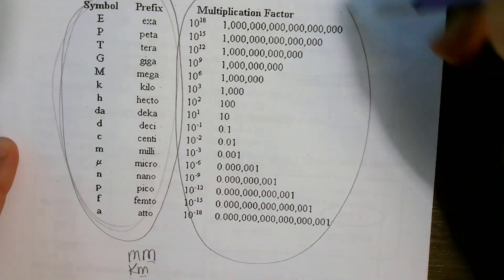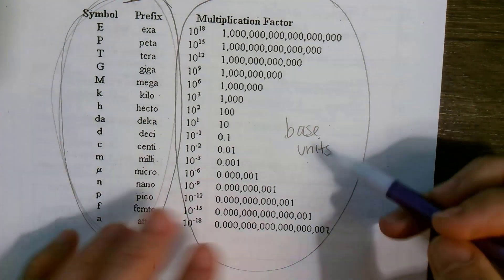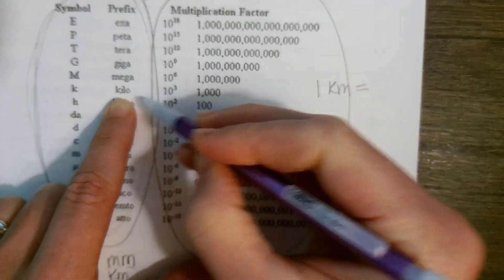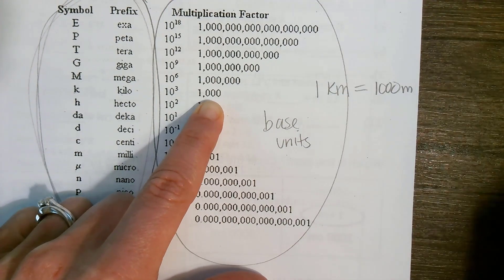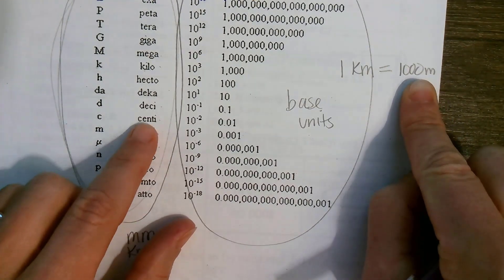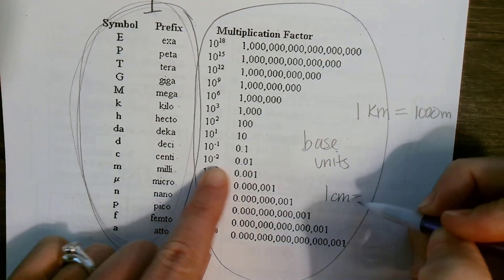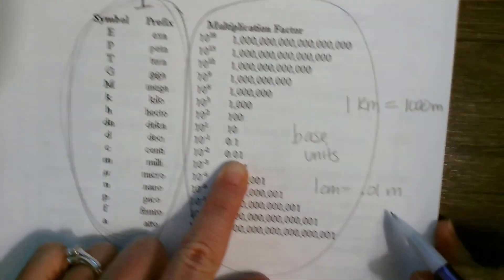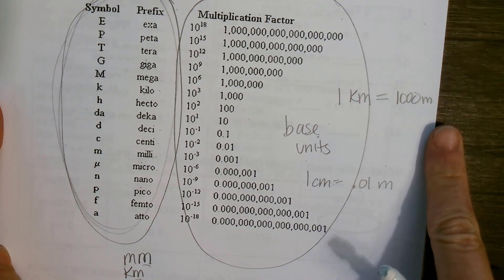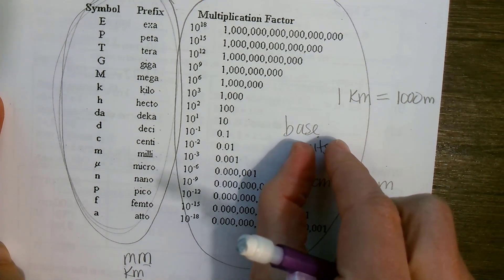So over here are my base units. My conversion factor: if I said kilo — one kilometer equals 1,000 meters. If I wanted centimeters — one centimeter equals 0.01 meters. A centimeter is a hundredth of a meter, which makes sense: if I had a meter stick, there would be 100 centimeters. One tiny spot would be a hundredth of a meter. This is how I suggest doing the next page.